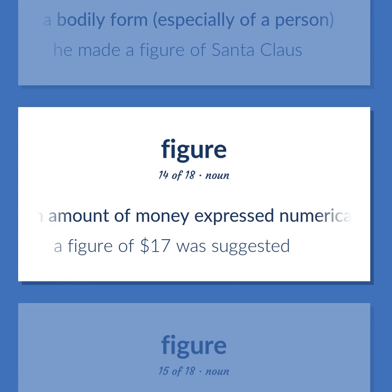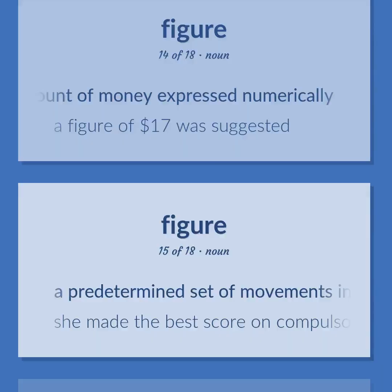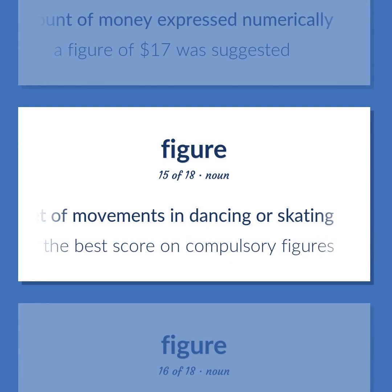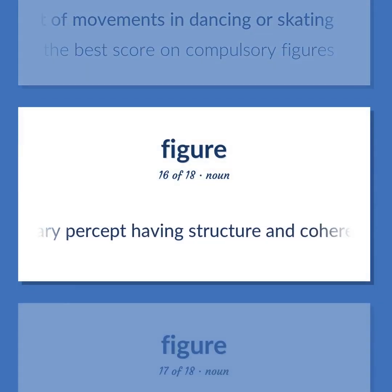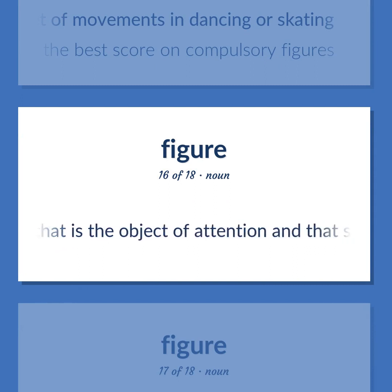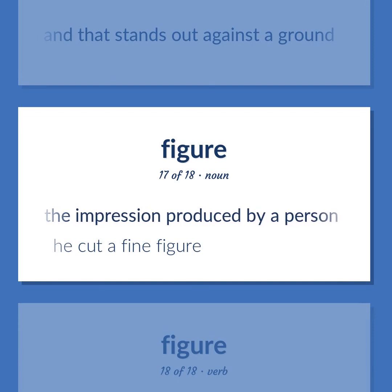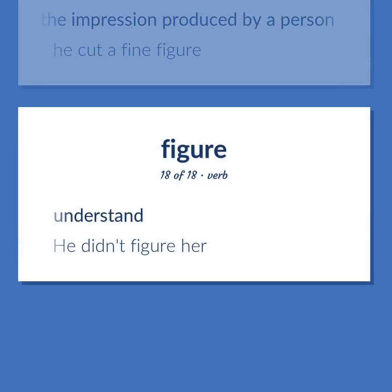An amount of money expressed numerically. Example: A figure of $17 was suggested. A predetermined set of movements in dancing or skating. Example: She made the best score on compulsory figures. A unitary percept having structure and coherence, that is the object of attention and stands out against a ground. The impression produced by a person. Example: He cut a fine figure. Understand. Example: He didn't figure her.